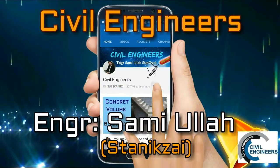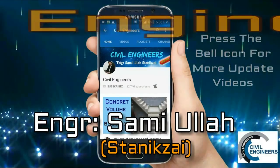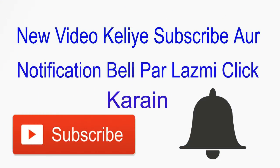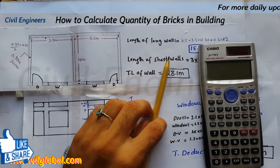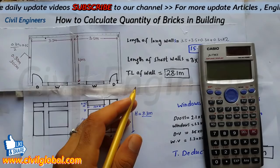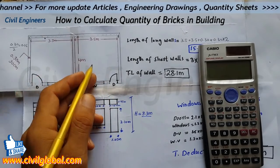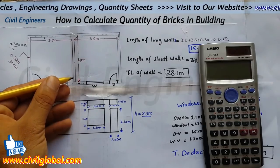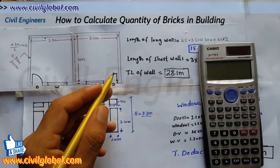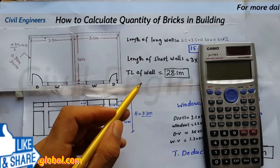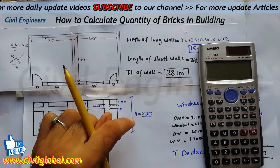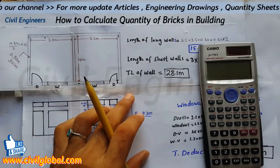Click on the subscribe button and press the bell icon for watching more update videos. Assalamualaikum friends, this is Sami and you're watching Civil Engineers YouTube channel. Today I am going to show you in this video lecture how you can find out the quantity for the bricks in two rooms. In the previous lecture I already told you about the center line method — the link is in the description. You will learn the quantity for the two rooms in detail.